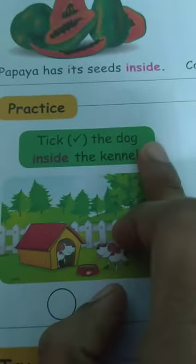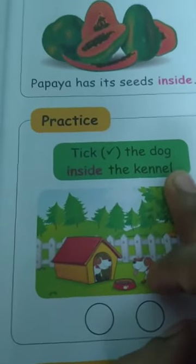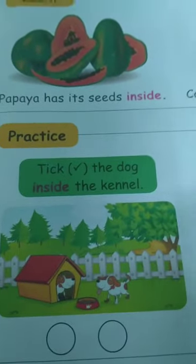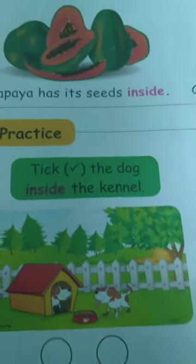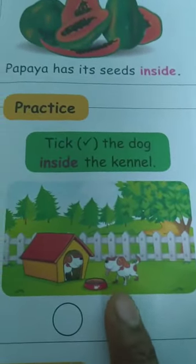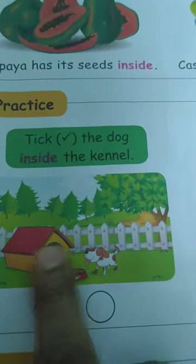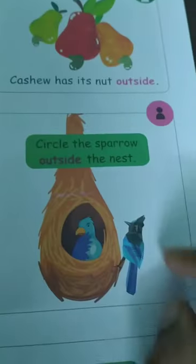Next — inside and outside. Take the dog inside the kennel. What does 'inside' mean? Inside means the inner part, that means the safe place. Look here, there are two dogs — which is in the safe place, that means the inner part, which is inside? Yes, the first one only is inside the kennel. So we take that one.